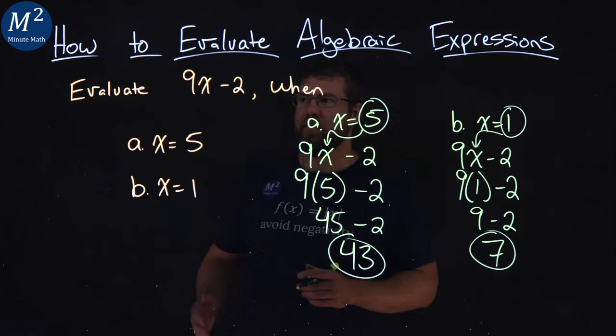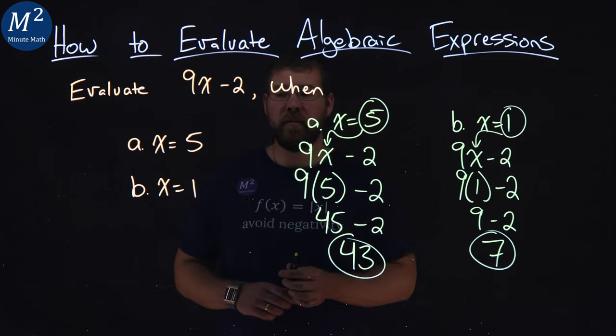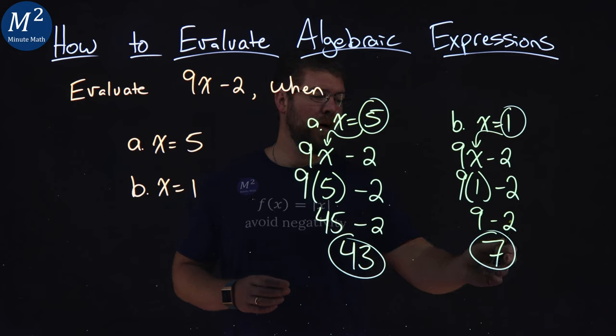And so now we've evaluated 9x minus 2, when x equals 5, and got a 43, and when x equals 1, we got a 7.